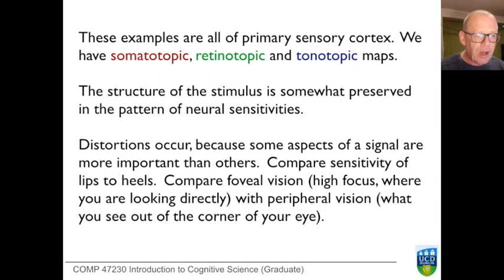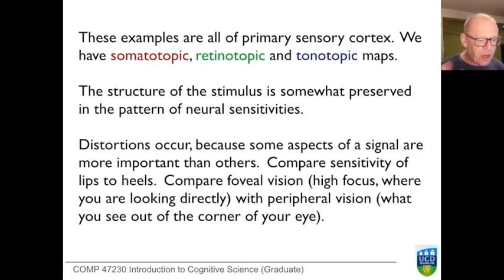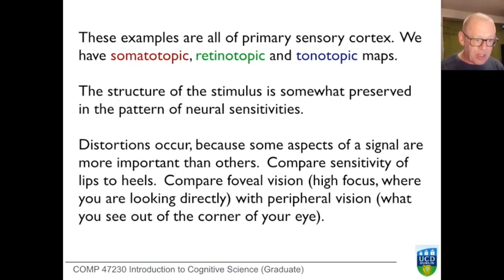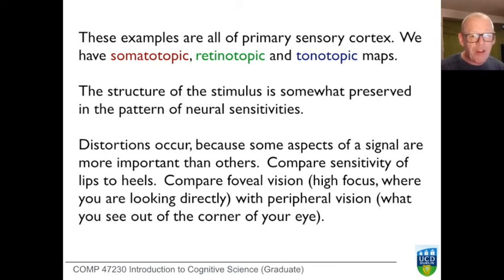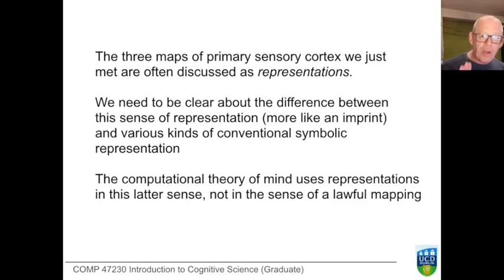All those maps are examples — and in fact we're back at maps, which introduce so many questions about representation. These are all causal mappings: the structure of the stimulus, the structure of what's going on at the sensory surface, is somewhat preserved in the pattern of neural sensitivities, much as something of the event of the hand is transferred to the clay and remains. There are inevitable distortions — this is not a simple translation. Some aspects of what's going on are more important than others, which is why in somatosensory cortex there's a lot of area devoted to the mouth and very little to the heels, and in the retina we see great concentration of cones around the fovea and something completely different in the periphery. Those maps we've already met are representations, but we're going to explore a different kind of sense of representation in the next few videos.